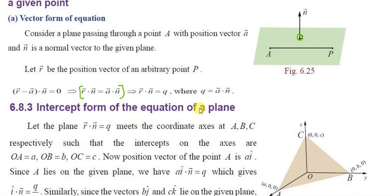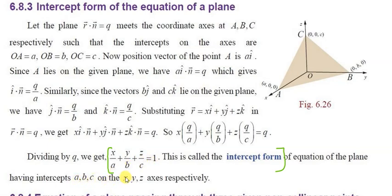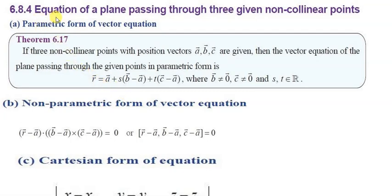Next topic: intercept form of the equation of a plane. Here, the point on the x-axis is (a, 0, 0), the point on the y-axis is (0, b, 0), and the point on the z-axis is (0, 0, c). The intercept form is: x/a plus y/b plus z/c equals 1, where a, b, c are the x, y, and z intercepts respectively.